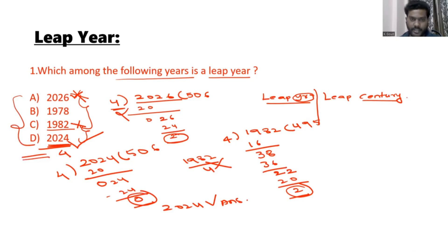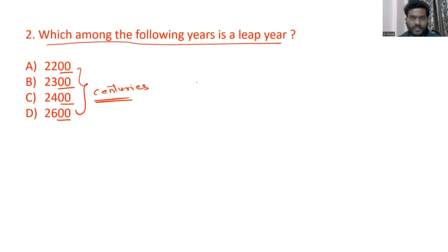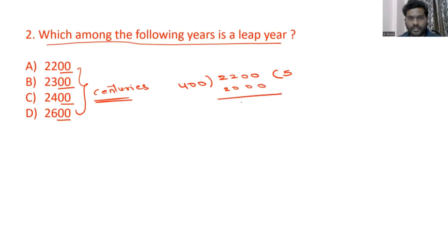Now moving to the second category. The question asks which among the following years is a leap year. If you observe all the options, the last two digits are '00', meaning these are all centuries. For centuries, the concept is to divide each century by 400 — if the remainder is 0, it is a leap century. For example, 2500 divided by 400: 400 times 5 is 2000, giving a remainder of 200, which is not equal to 0.